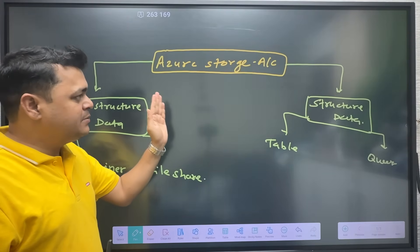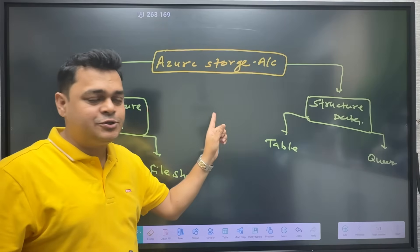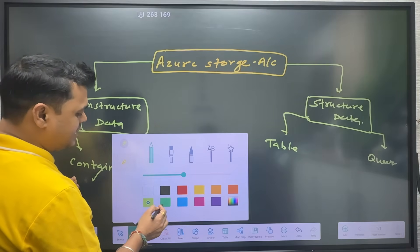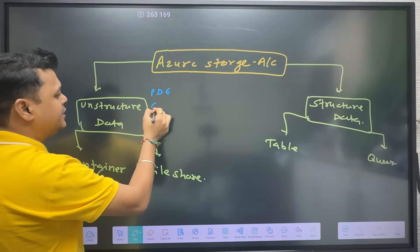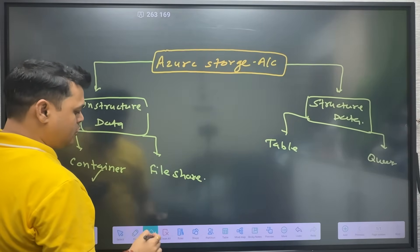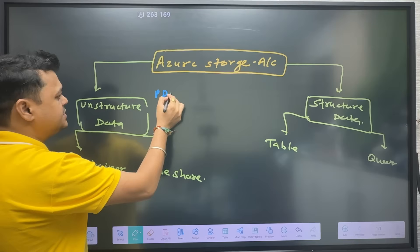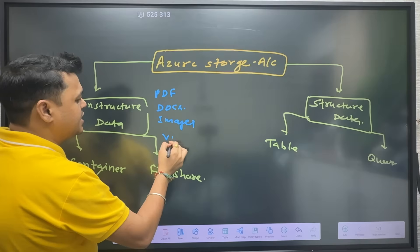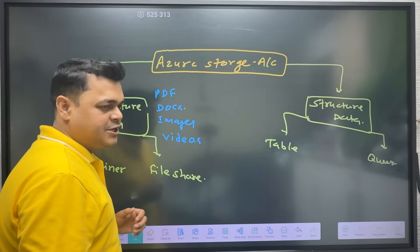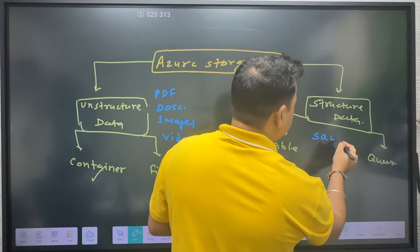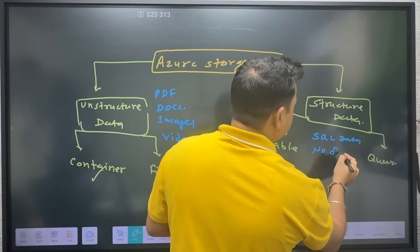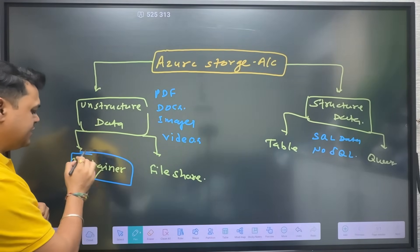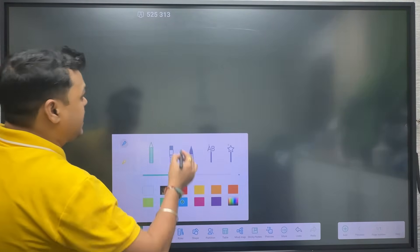The Azure storage account provides two different options to store data — unstructured and structured. Examples of unstructured data include any kind of PDF file, document file, images, and video files. If you are going to store SQL database or NoSQL database data, those are considered structured data. Any unstructured data should go into containers or file shares.